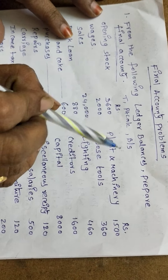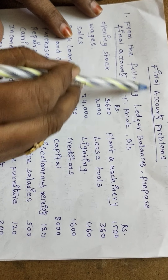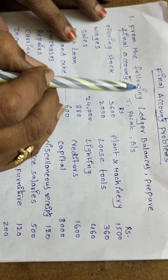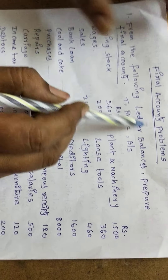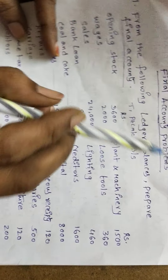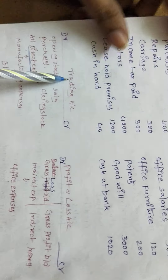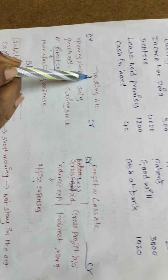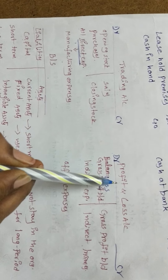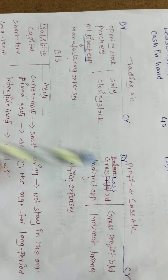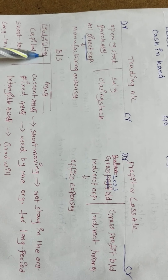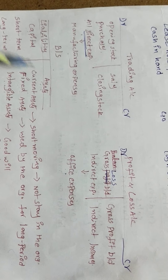There are three components in final accounts: trading account, profit and loss account, and balance sheet.